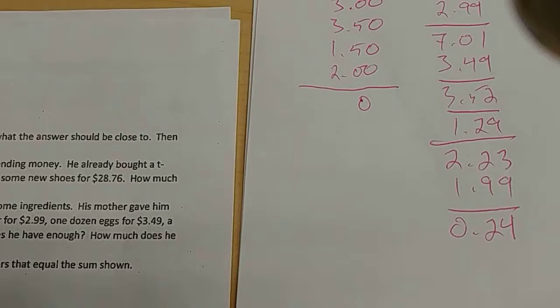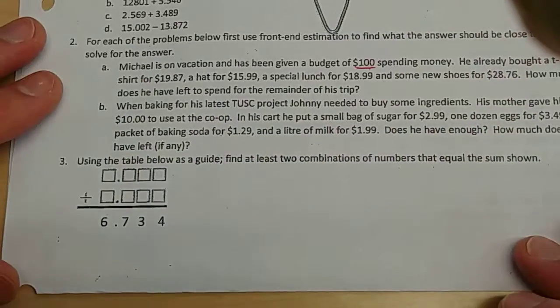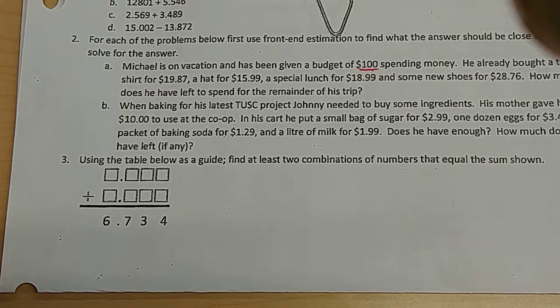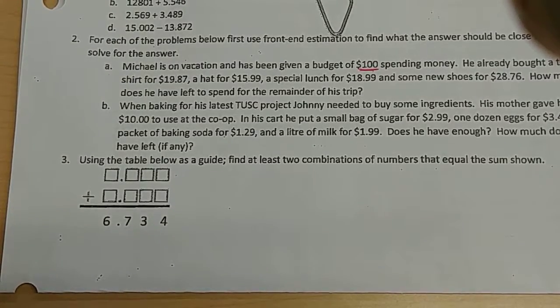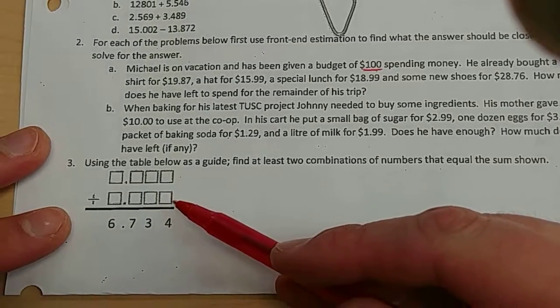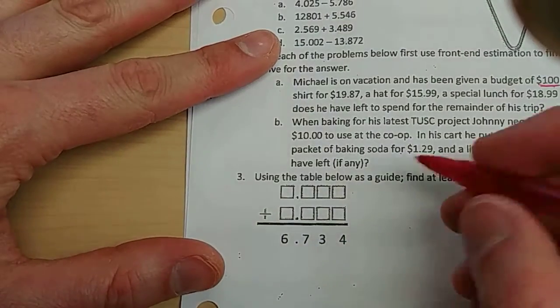All right. Last but not least, using the table below as a guide, find at least two combinations of numbers that equal the sum. How many possible answers do you think there might be? One, two, three, four, five? Lots? Tons? Yeah, there could be tons. All you have to do to fill in something like this is like this. Maybe I'll just go one decimal two, three, four.